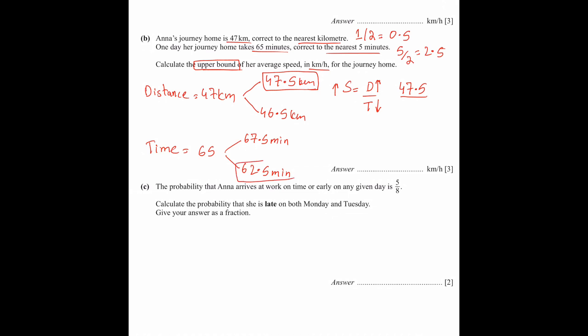And as I told you, the time is given in minutes, so we need to convert to hours. We need to divide by 60. Now since this is a paper 2 question, I will put it in the calculator and tell you the answer. So 47.5 divided by 62.5 divided by 60. This answer is 45.6 km per hour.